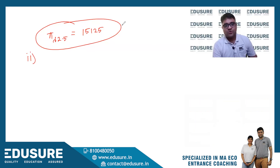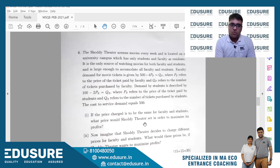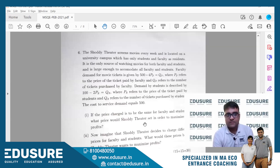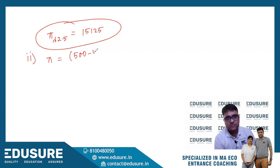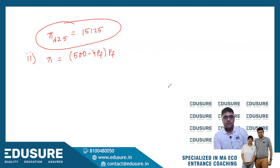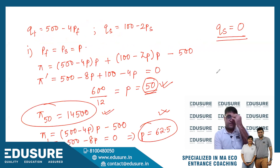Now for the second part: imagine Shoddy Theater decides to charge different prices for faculty and students. What would these prices be to maximize profits? Now there are separate markets for both. The profit equals (500 minus 4*PF) times PF — that is QF times PF — plus (100 minus 2*PS) times PS — that is QS times PS — minus the constant cost of 500.